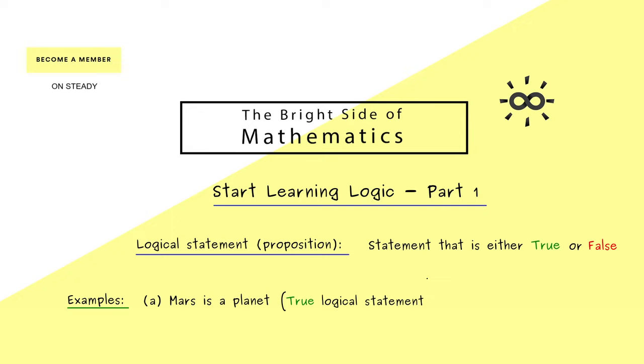In this way we can also formulate the sentence Pluto is a planet, which is by the same agreement also a logical statement. However, this one now has the truth value false.